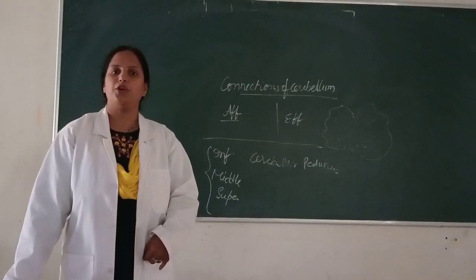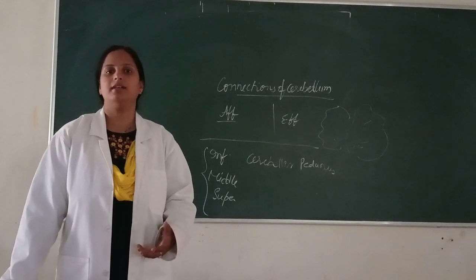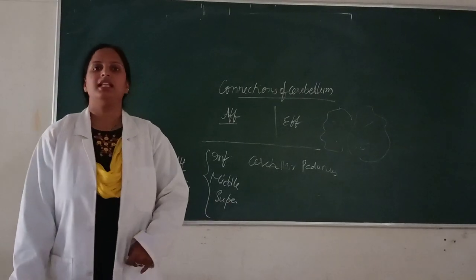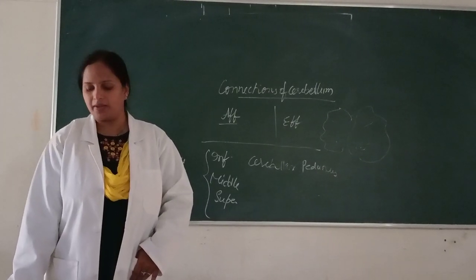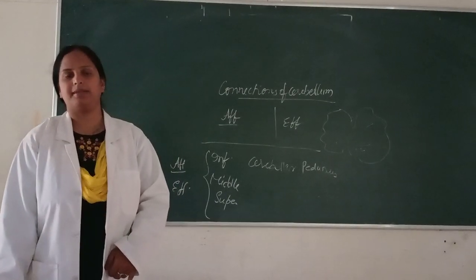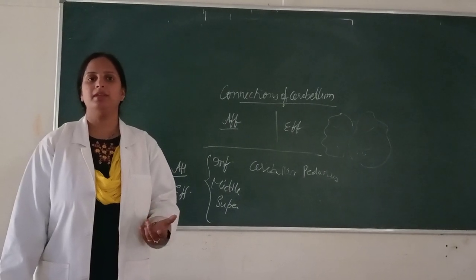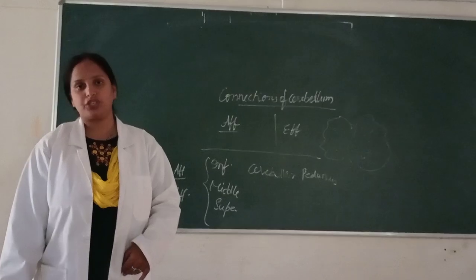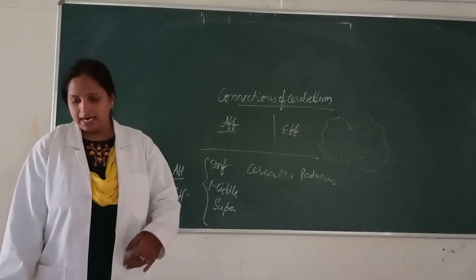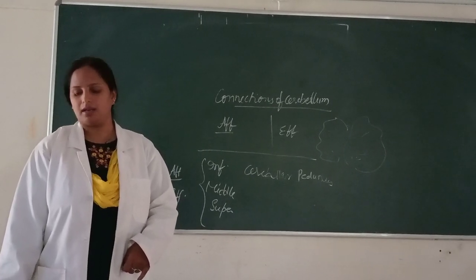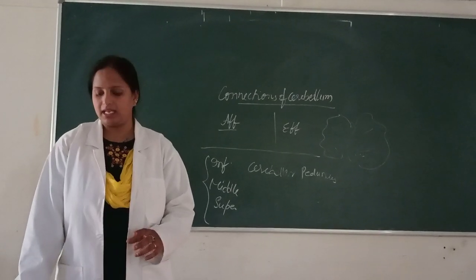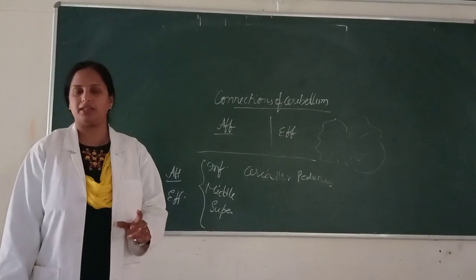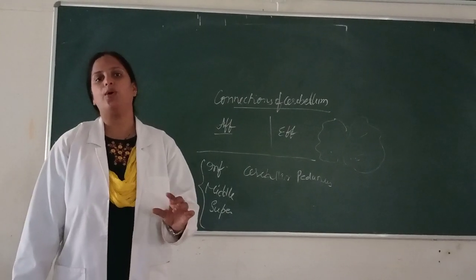What are all the afferents to the cerebellum and what are all the efferents from the cerebellum? Afferents means those which are coming towards the cerebellum; efferents means those going away from the cerebellum. The afferents coming to the cerebellum are from the cerebral cortex, from the spinal cord, via the vestibular nerve, and via the red nucleus and the tectum. From the cortex, there are three pathways: the cortico-ponto-cerebellar pathway, the cortico-olivo-cerebellar pathway, and the cortico-reticular pathway.